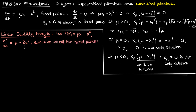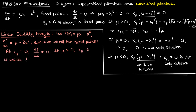I discussed linear stability analysis in my earlier video in this nonlinear dynamics series. If we evaluate df/dx at xf = 0 we find that the stability of this fixed point depends on μ: if μ is positive then this fixed point is unstable, but if μ is negative then this fixed point is stable. When μ equals 0, df/dx is just 0, but xf₁ is not half-stable — it's actually stable.